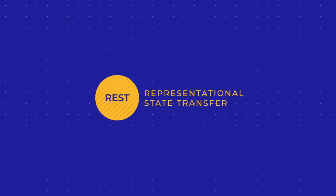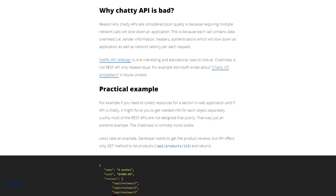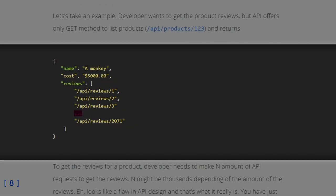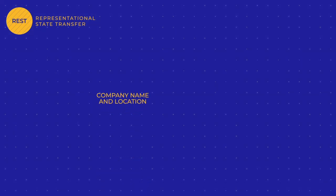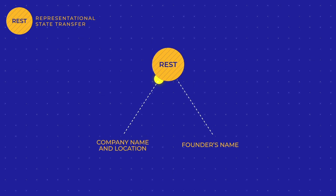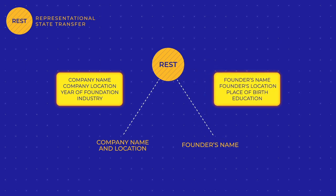Now to the fly in the ointment: REST APIs can be too chatty. Clients have to make a number of separate calls to different resources, and in addition to the relevant data they also download lots of unrelated info. For example, to get a company's name and location plus its founder's name, our REST API makes two calls — the first fetches all info associated with the company, the second gets the full list of data on its founder. It takes more time and resources to get the reply than was needed.